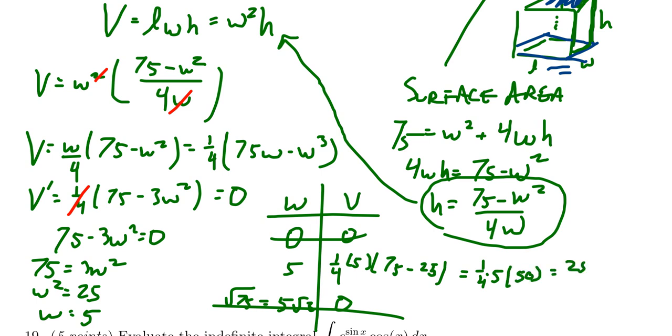That's going to give you 250 over 4. Four does go into that thing evenly, so we end up with, I take that back, two goes into 250 evenly, so you'd end up with 125 over 2.